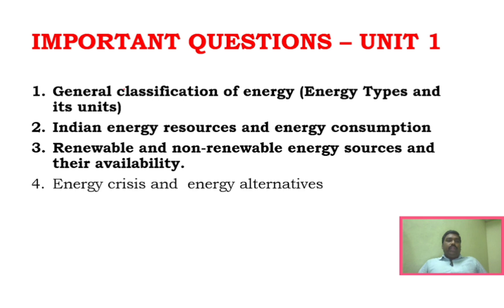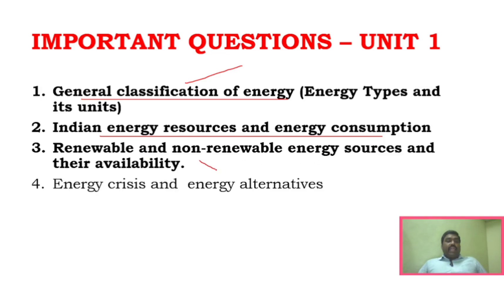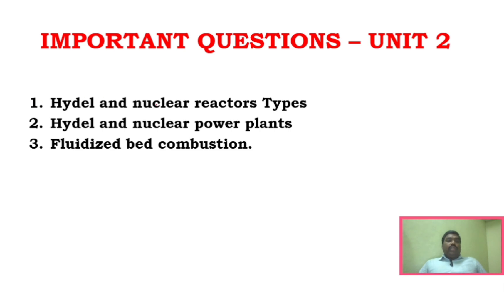For important question discussion: Unit 1 includes general classification of energy, Indian energy resources and energy consumption, renewable energy sources and their availability, and energy crisis and energy alternatives — these are the most important questions. Unit 2 has only three questions: hydro and nuclear reactor types, hydro and nuclear power plants, and fluidized bed combustion.